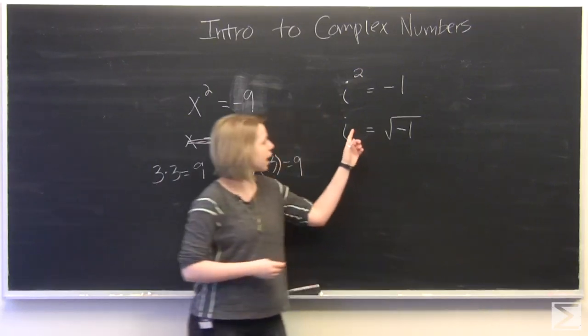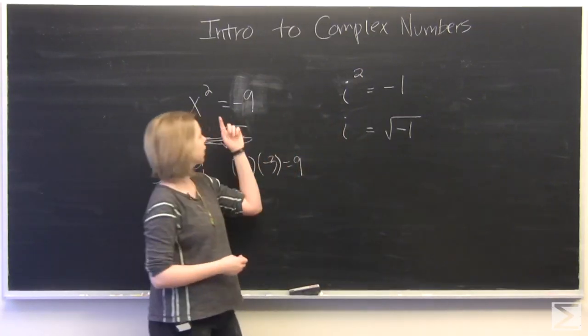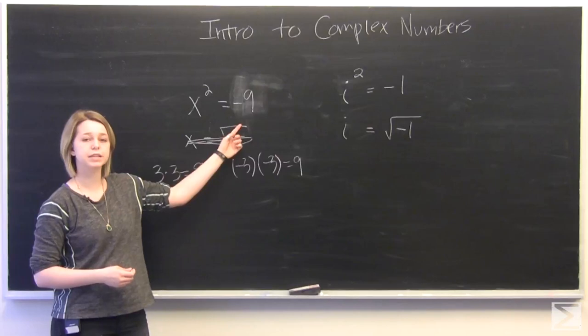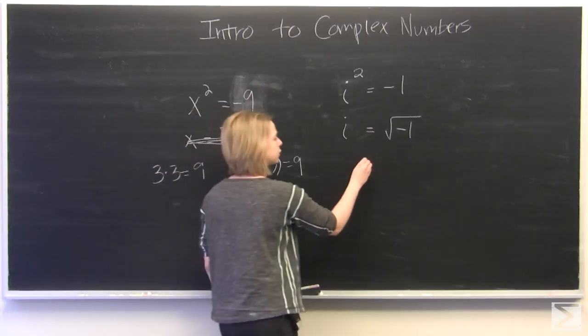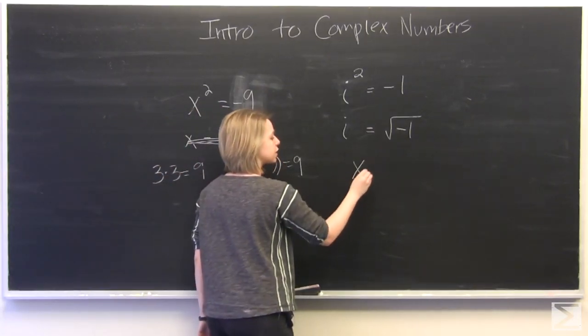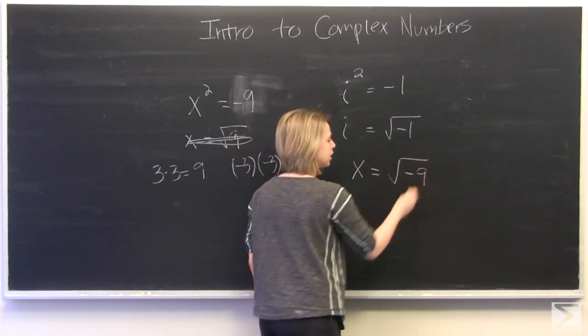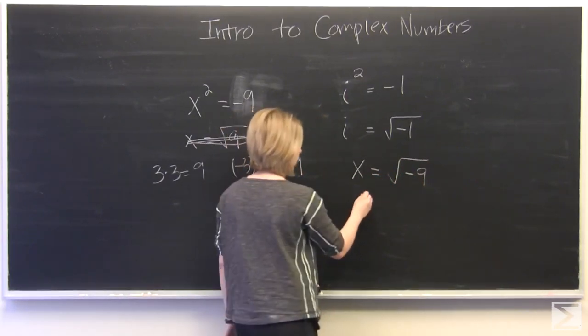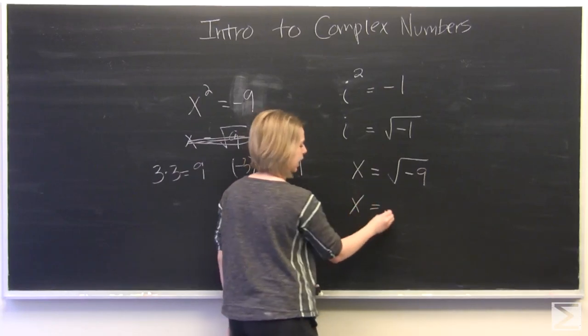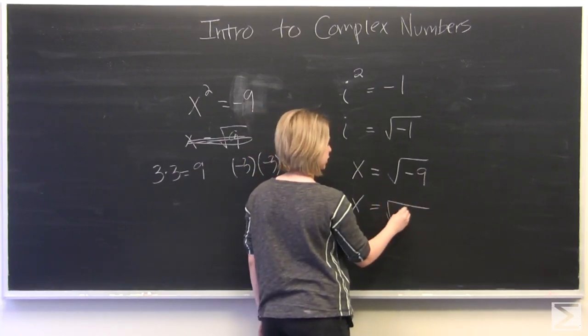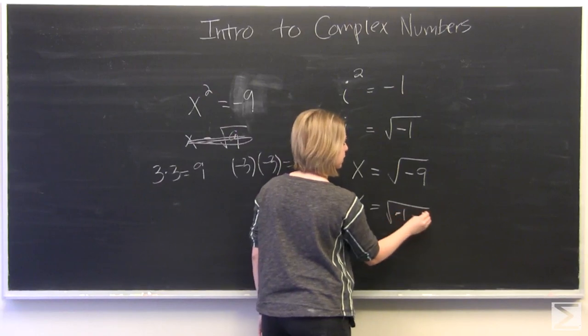So we can use i in order to solve for x squared is equal to negative 9. We're going to take the square root of both sides. So x will be equal to the square root of negative 9. And we can split up negative 9 into negative 1 times positive 9.